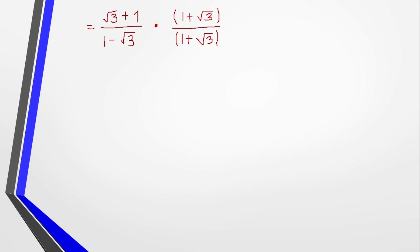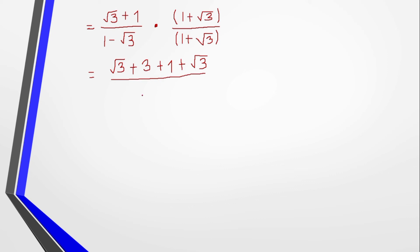Using the FOIL method on the numerator: square root of 3 times 1 is square root of 3. Then square root of 3 times square root of 3 is square root of 9, which equals 3. Then 1 times 1 is 1. Then 1 times square root of 3 is square root of 3. So the numerator gives us square root of 3 plus 3 plus 1 plus square root of 3.